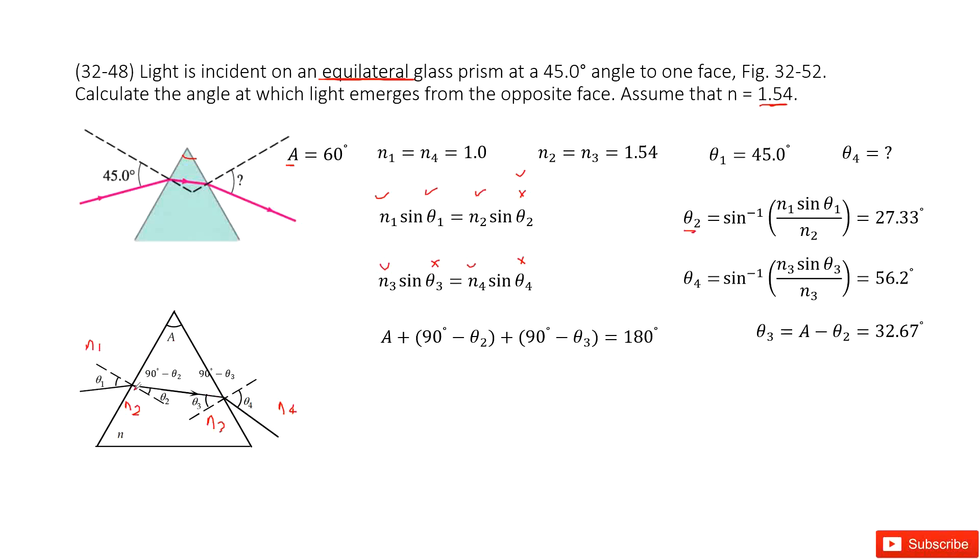We look at this triangle. See, this is 90 degrees. So that makes this angle equal to 90 degrees minus θ2, right? And this is also 90 degrees, so this angle is 90 degrees minus θ3.